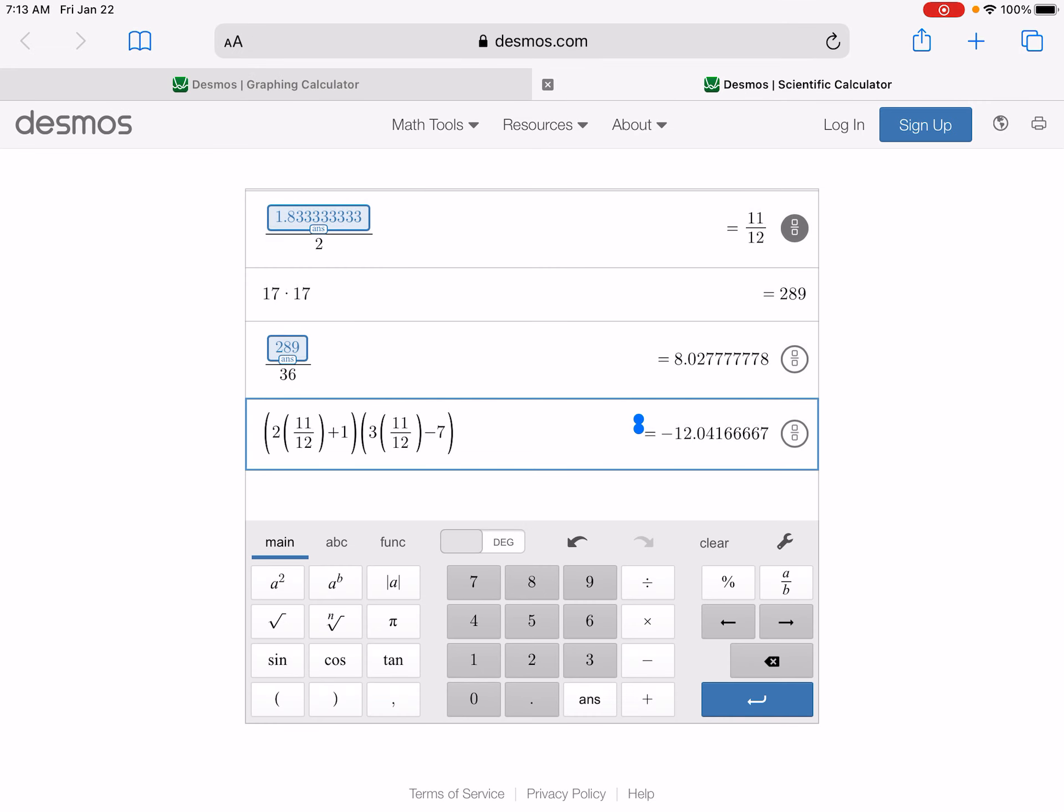So then our vertex is at 11 twelfths, negative 289 24ths, or you could have the 0.96, negative 12.04. So 2, 4, 6, 8, 10, 12. I'm going by 2s again. Since I'm going by 2s, I have to mark on my graph that there's 2s. So that was 12, right here. And then we get that picture here.